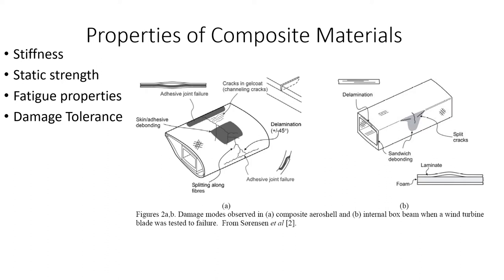Here, some of the properties of composite materials are listed: stiffness, static strength, fatigue properties and damage tolerance. In the pictures we can see the damage models observed in a composite aeroshell, and in the second picture, an internal box beam when a wind turbine blade was tested to failure.